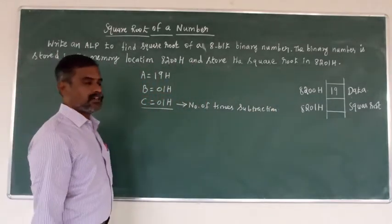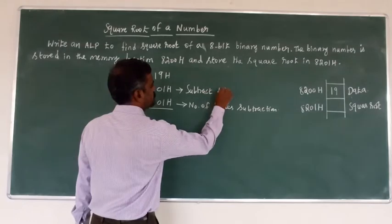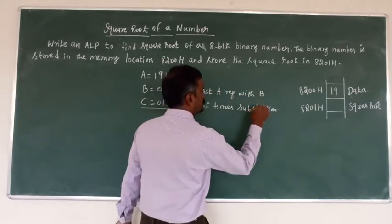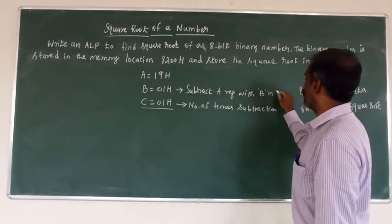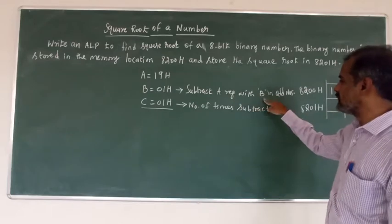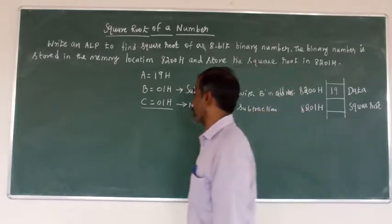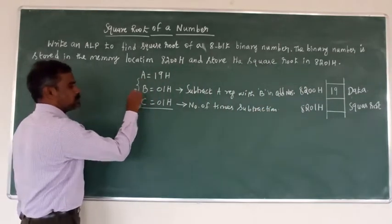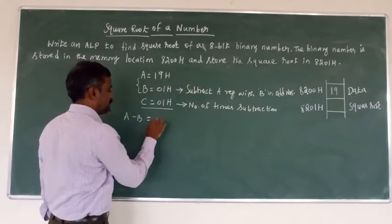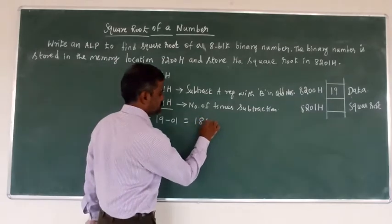The B register is used to subtract from the accumulator with odd numbers. We subtract B from A in odd number sequence. First, subtract: 19H minus 01H equals 18H in the A register.